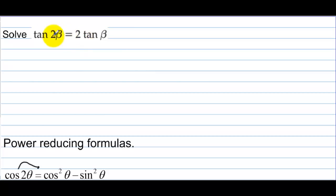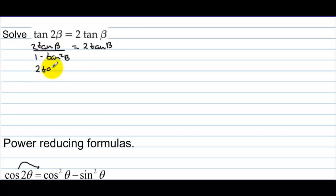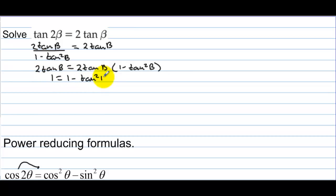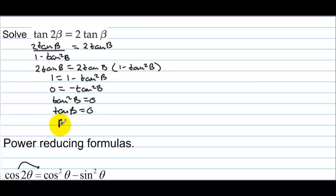Solve tangent of 2b equals 2 tangent b. Substituting the double angle formula: 2 tangent b over (1 minus tangent squared b) equals 2 tangent b. Multiply both sides by (1 minus tangent squared b), then divide by 2 tangent b to get 1 equals 1 minus tangent squared b. This gives tangent squared b equals 0, so tangent b equals 0, meaning beta equals 0 and pi.